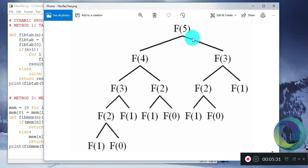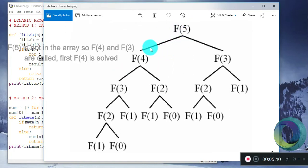Let's see how. We pass 5 as argument in our fibmem function. Since the array does not know the value of F of 5, it will call fibmem function with 4 and the fibmem function with 3. First F of 4 would be solved.